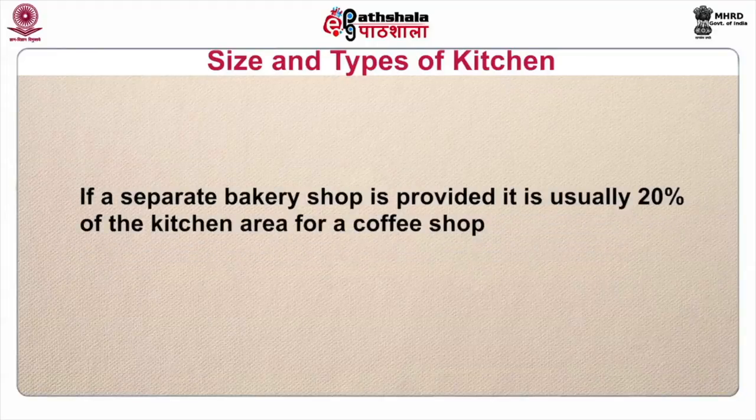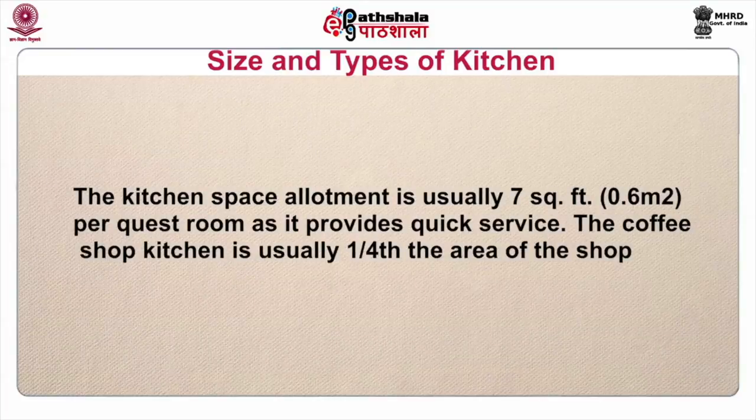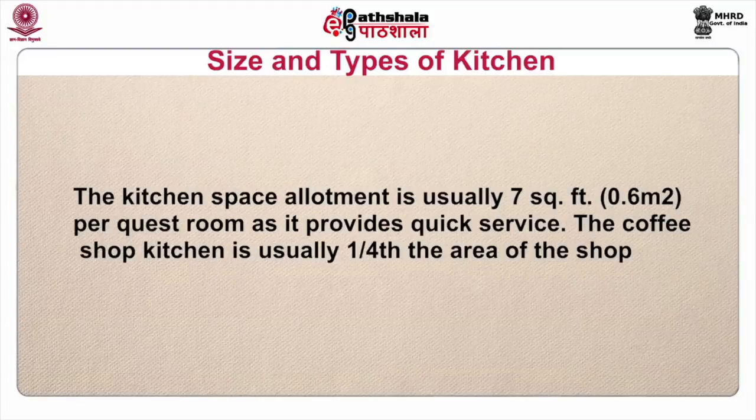If a separate bakery shop is provided, it is usually 20 percent of the kitchen area for a coffee shop. The kitchen space allotment is usually 7 square feet per guest room as it provides quick service. The coffee shop kitchen is usually one-fourth the area of the shop. Thus the size of the kitchen varies directly with the type of establishment and its service style. In a kiosk, for example, where ready-to-serve snacks are displayed for sale and the only preparation consists of making eggs to order, sandwiches, tea and coffee, the size of the preparation area will be very small.